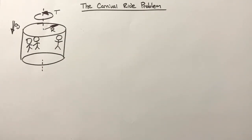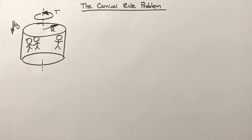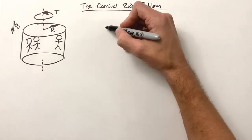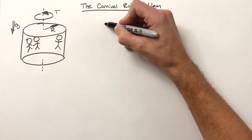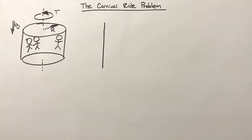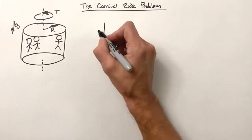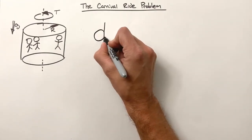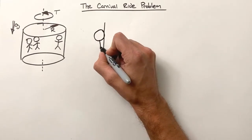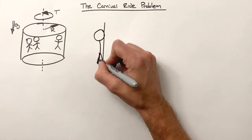The best way to understand what's going on is to draw a free body diagram, and honestly that's the hardest part of this whole problem. I'm going to draw the wall right here, and we're going to draw the person smushed up against the wall.